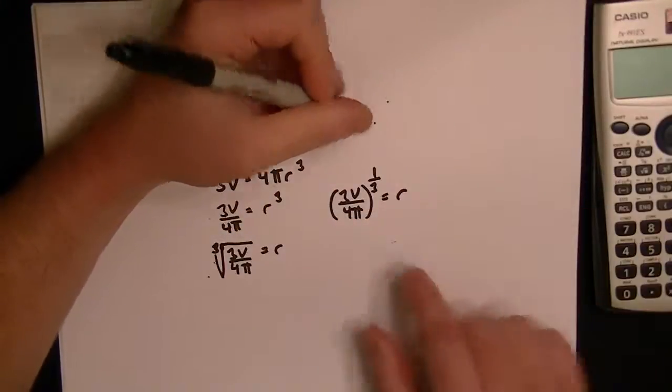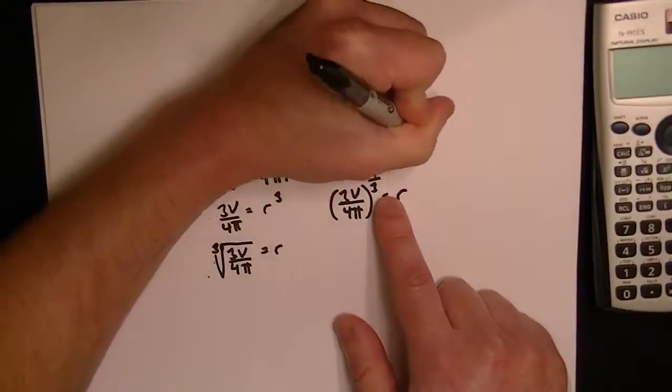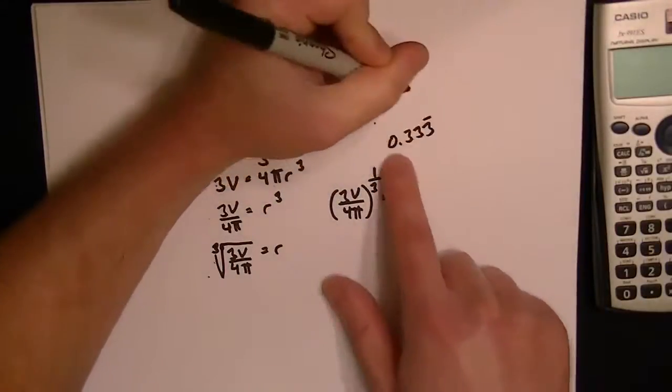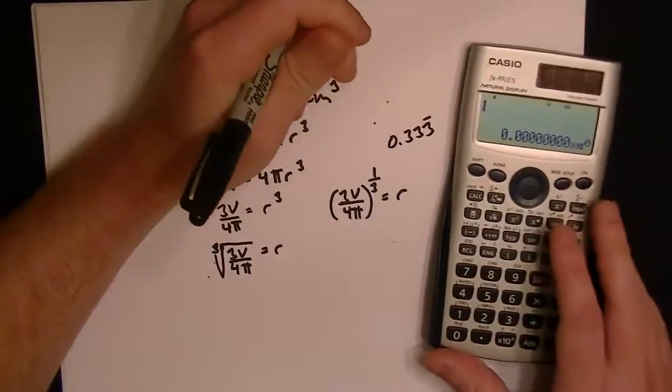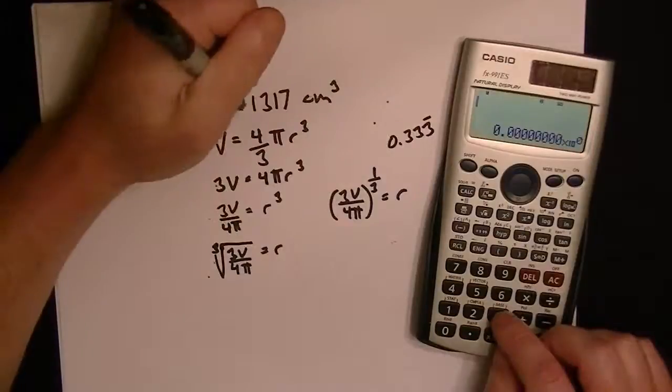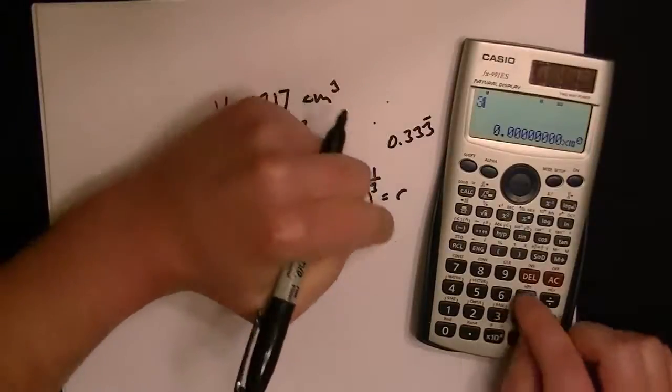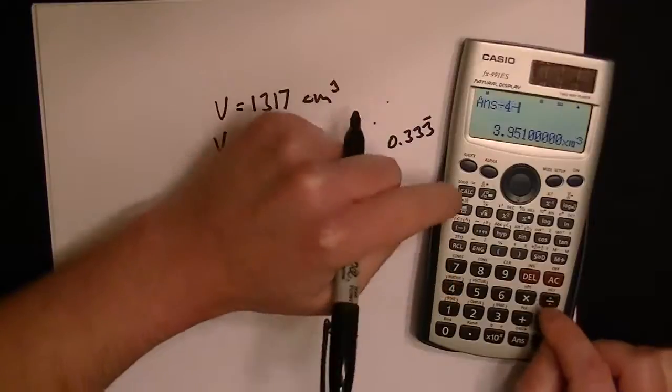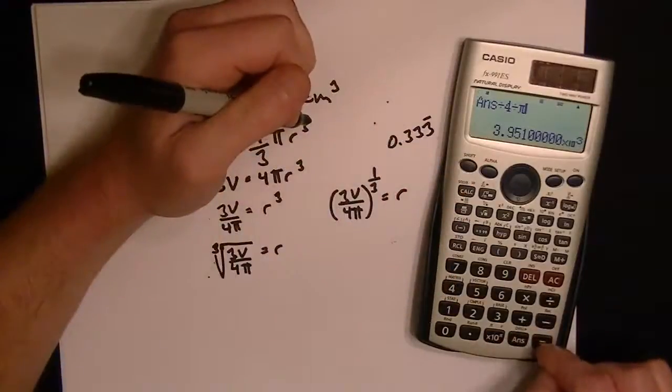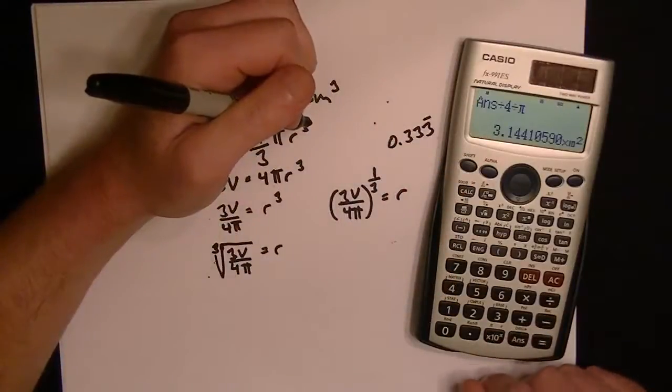When you put in the 1 third in your calculator, you put it in the decimal form, so it's .333 and as many threes as you can fit. Now we just fill in the volume, so we have 3 times 1317, divided by 4, divided by pi. And that gives us 314.